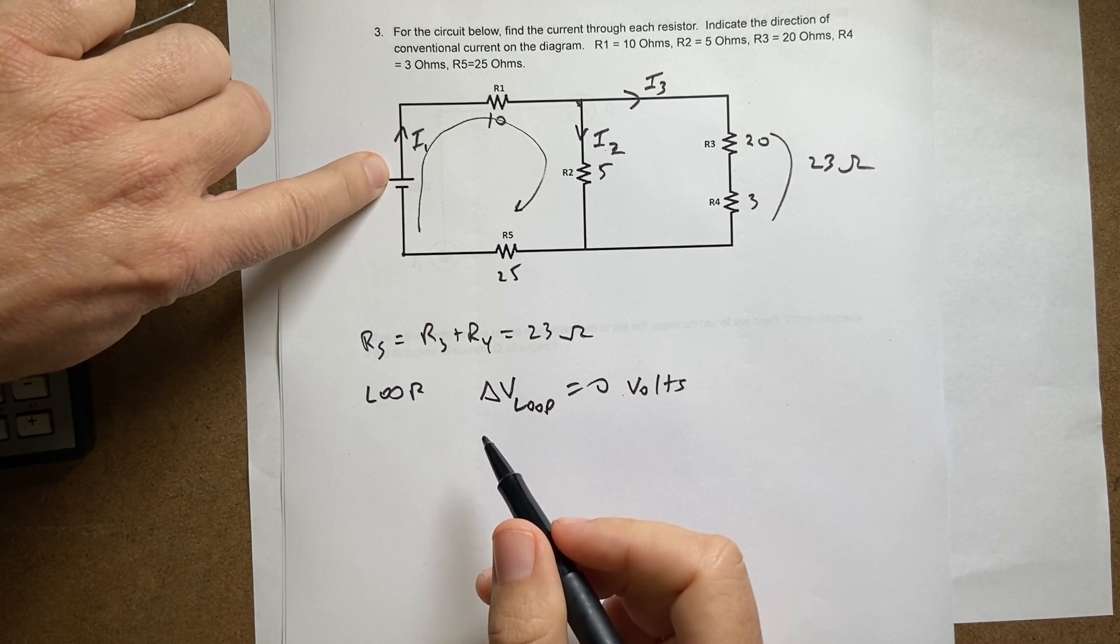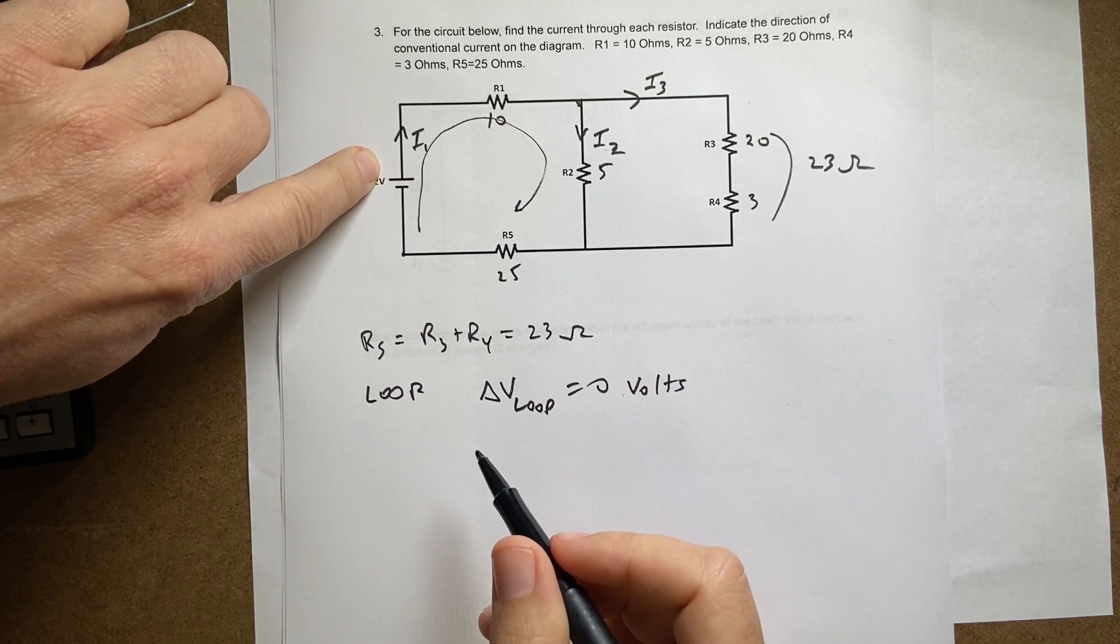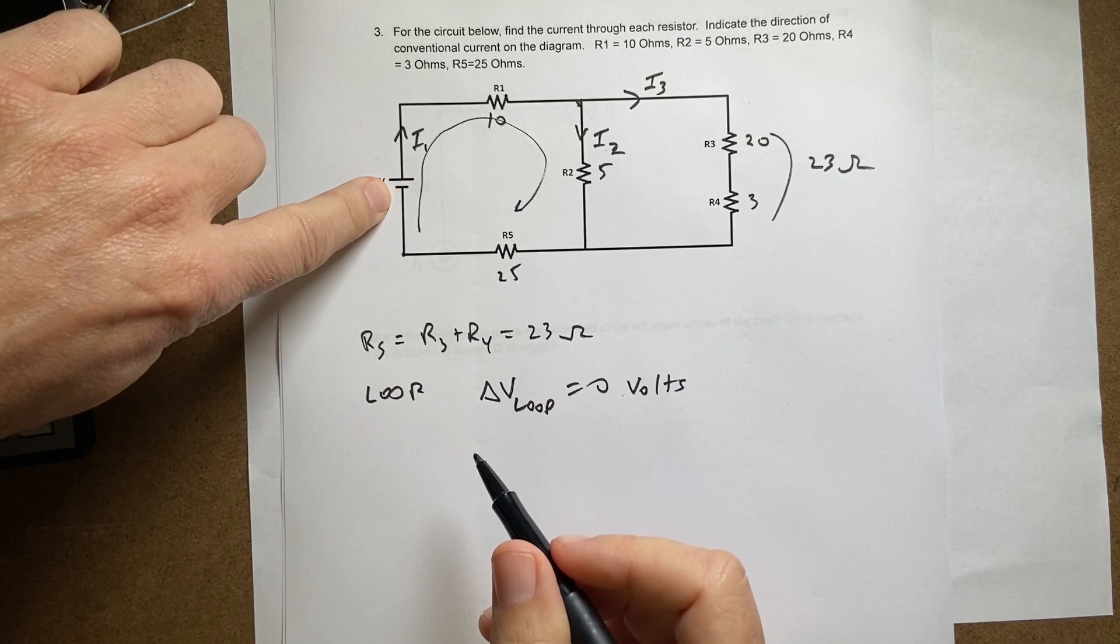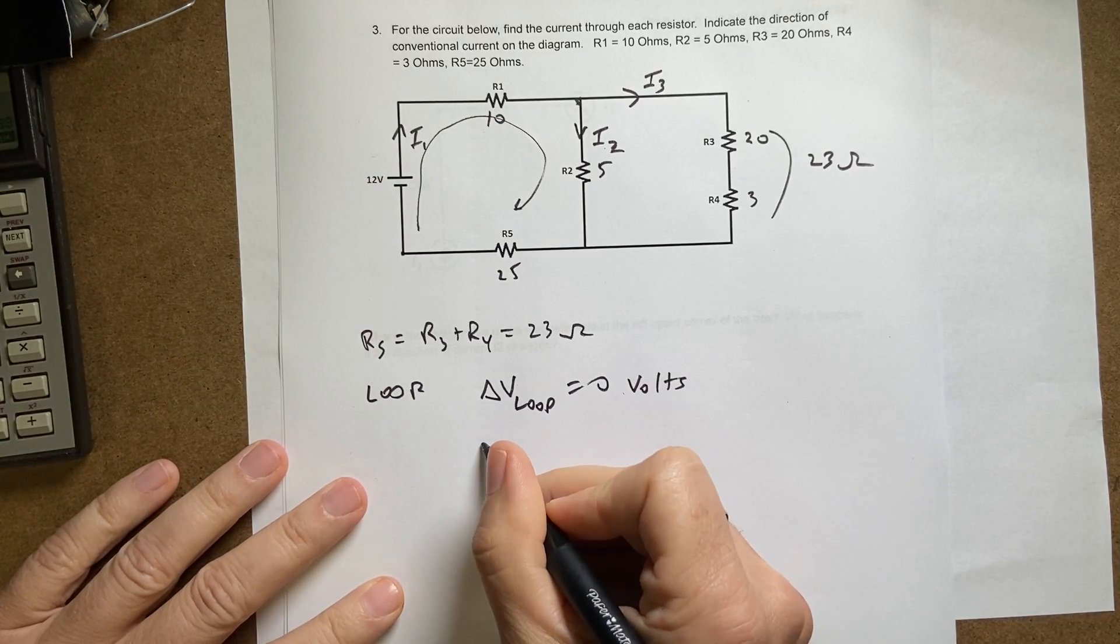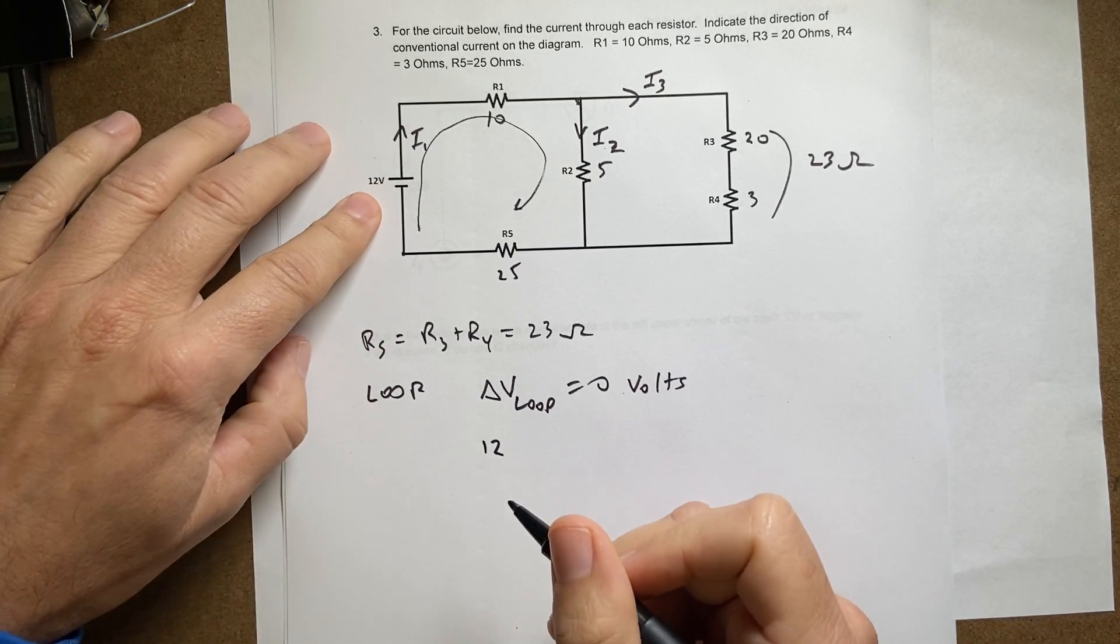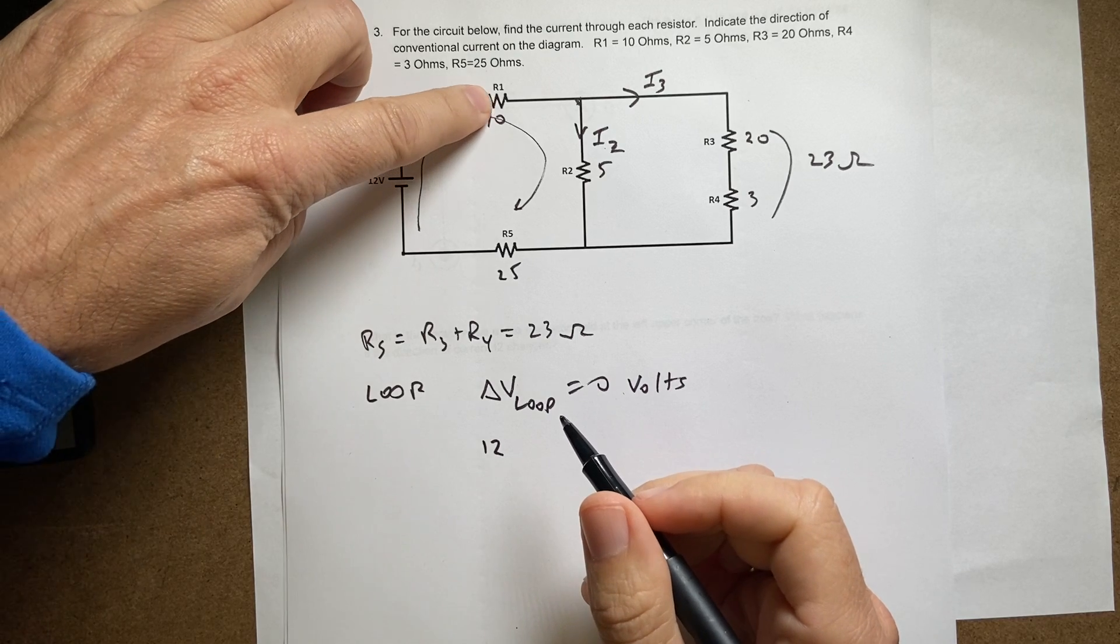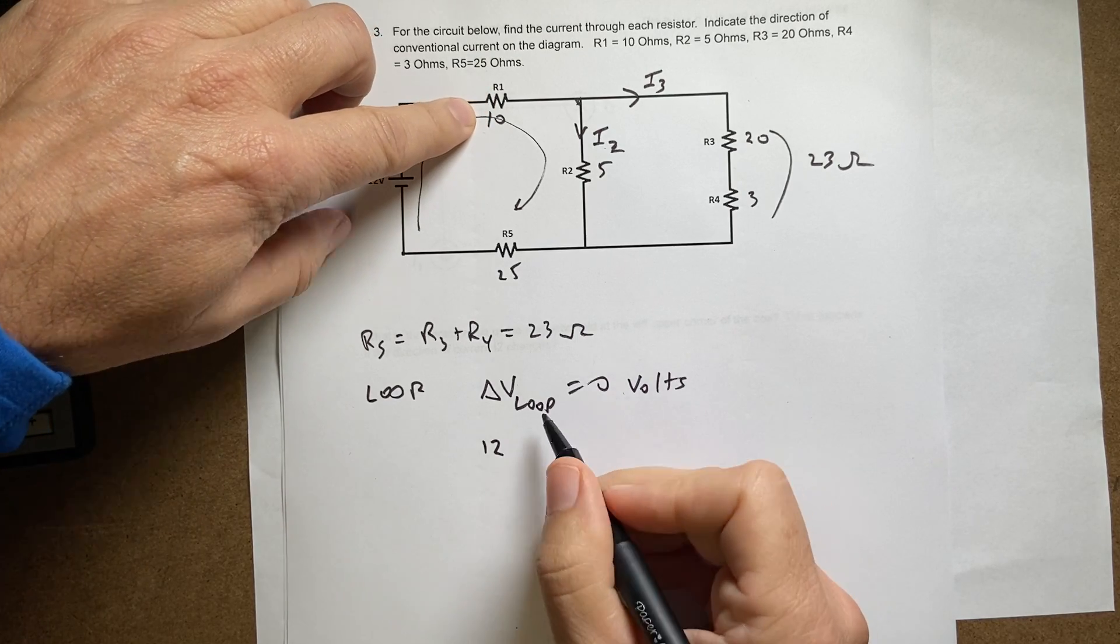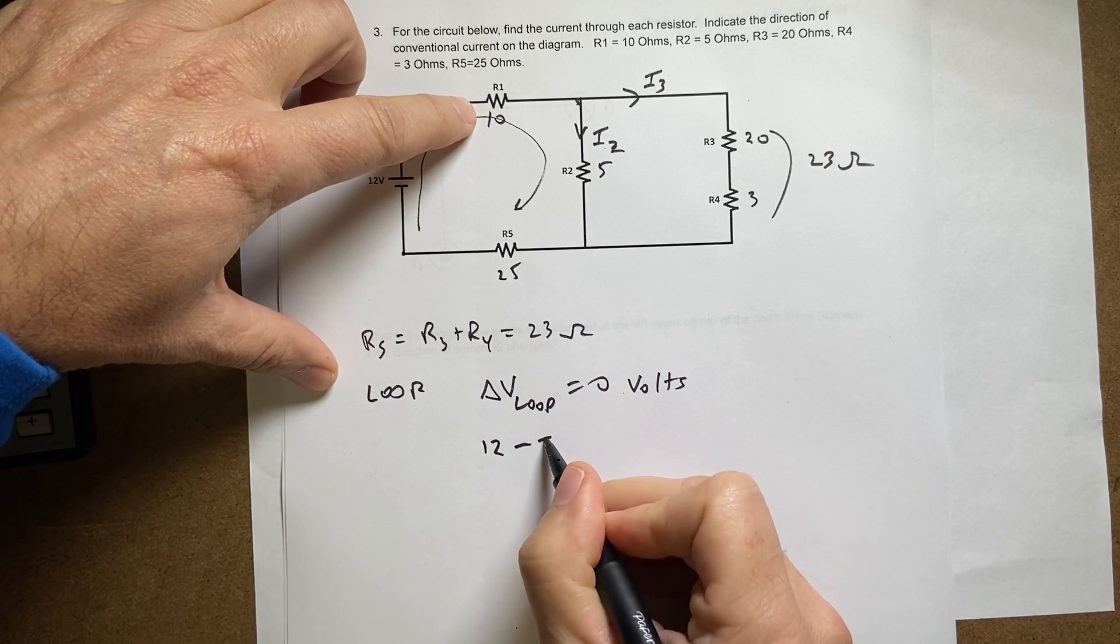And then over here I'm going in the same direction as the current, so it's going to be minus i1 times 10. I'll leave off the units. And then here I'm going in the same direction—actually I could combine these two but I'll leave it, don't worry about it.